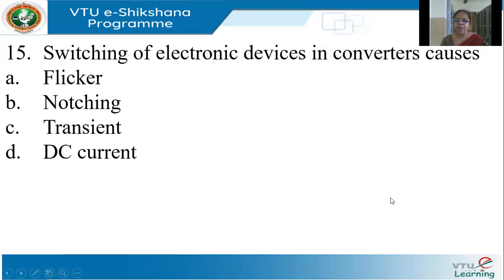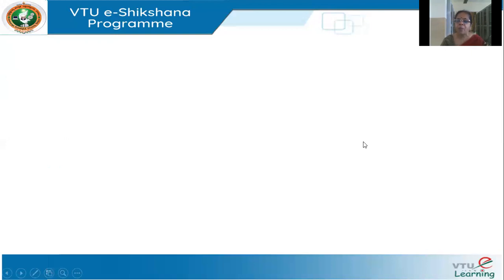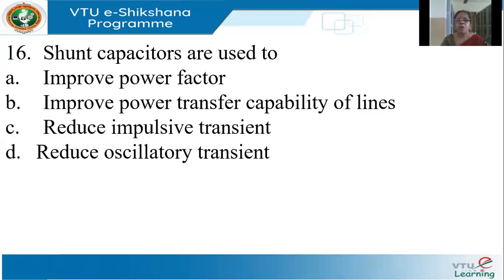Switching of electronic devices in converters causes notching. A notch is a small variation in the voltage caused whenever there is commutation from one switching device to another, as current is transferred from one device to another.